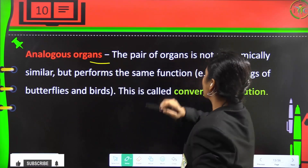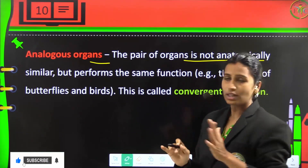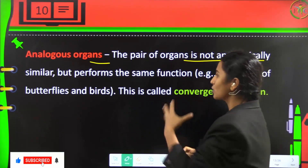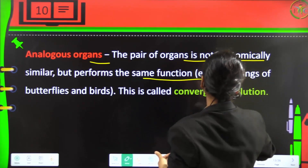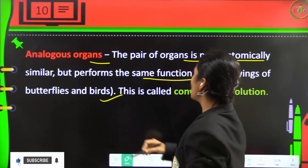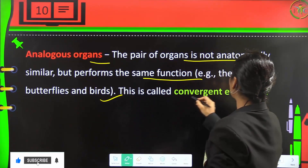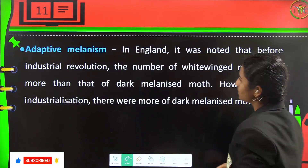Analogous organs are pairs of organs that are not anatomically similar but look alike and perform the same function. An example is the wings of butterflies and birds. This is called convergent evolution.